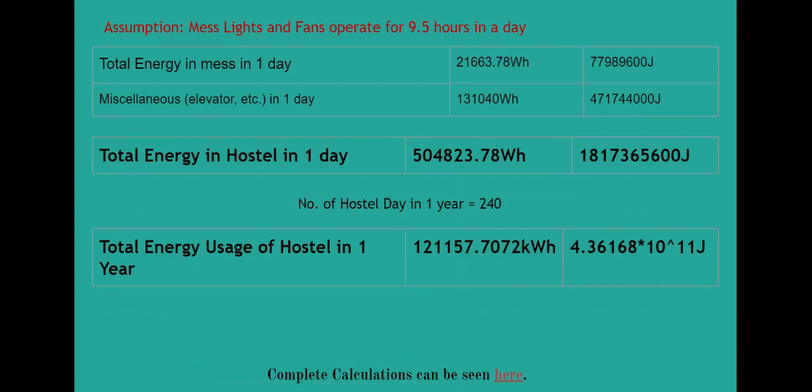Total energy in the mess — here we assume that lights and fans are operating for 9.5 hours a day. This gives us the number for total energy consumption in the mess, and then the miscellaneous energy consumption, which is provided for the elevator.